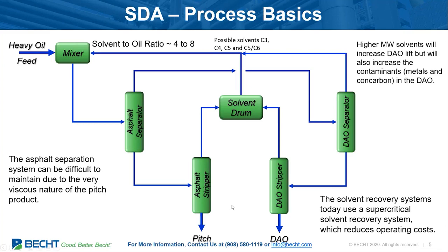The bottom line is you get two products: pitch and de-asphalted oil. Again, the higher the molecular weight of your solvent — as you go from C3s to C5s or even C6s — the more de-asphalted oil you're going to recover, the bigger the lift. But the bigger the lift, the more contaminants you're going to get in the de-asphalted oil.